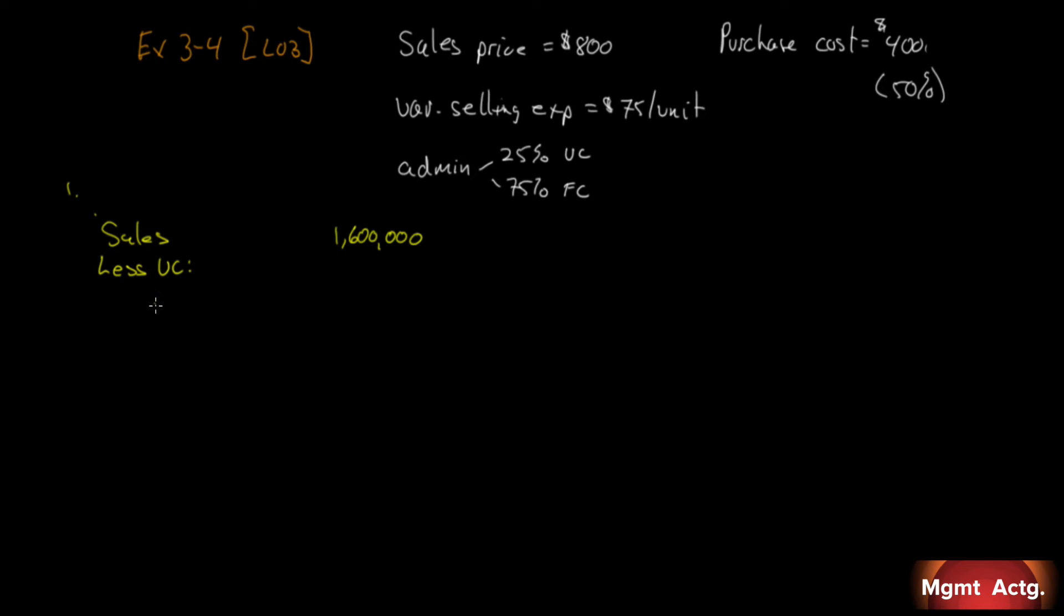Less variable costs. The first variable cost is purchases. Every time we sell a guitar, we have to buy one. They're $400 each, these are $800. We could divide $1.6 million by $800 to get the number of guitars, then multiply by $400, or just realize that's half. That's $800,000.